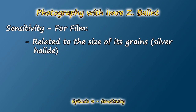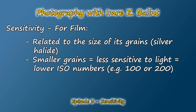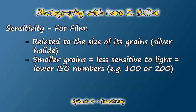On my blog you'll find more information about the ISO standards. For film, sensitivity is basically related to the size of its grains. The grains are usually a compound like silver halide, and they're on the emulsion of the surface of the film. The smaller these grains, the less sensitive the film is to light, so you'll encounter lower ISO numbers such as ISO 100 or 200.